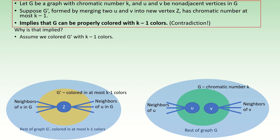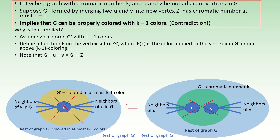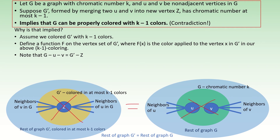To demonstrate, assume that we properly colored G' with k minus 1 colors. Define a coloring function f which takes as its input vertices of G' and outputs the color used in our proper k minus 1 coloring of G'. Notice that the graph formed by deleting vertex z from G' is the same graph as formed by deleting vertices u and v from G. Since G' was originally properly colored by function f, the remaining graph is still properly colored by f. Therefore, if we return to our original graph G, we could apply the coloring function f to all vertices in G except for u and v, and get a proper coloring of that subgraph with at most k minus 1 colors.